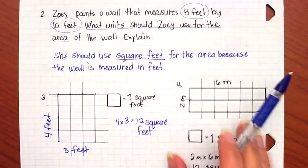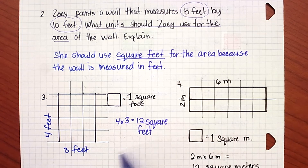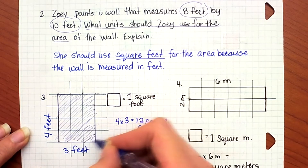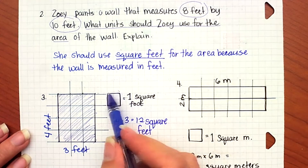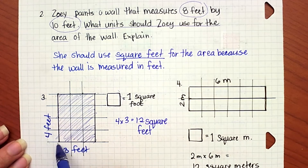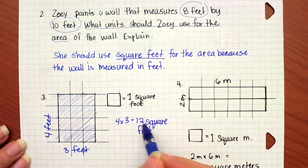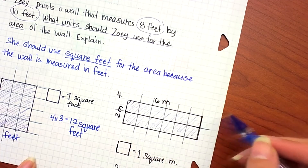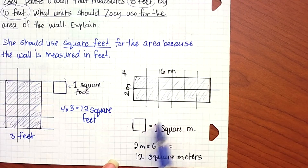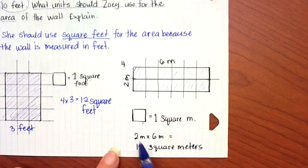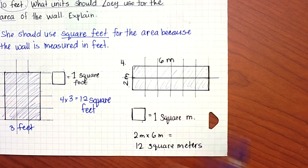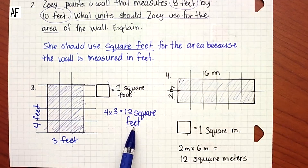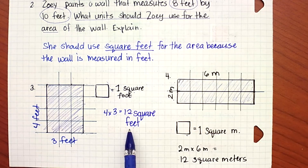For numbers three and four, they gave you a shape and a unit and asked you to find the area. The first shape is four feet by three feet — four times three gives 12 square feet. The second shape: they told us one square equals one square meter. This shape measures two meters by six meters, so two times six gives 12 square meters. Remember to pay attention to the unit they give you and put the correct units on your answer — especially with area, it is very important to use the correct unit.